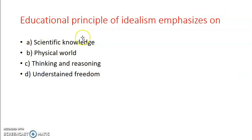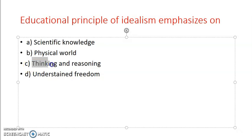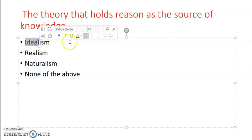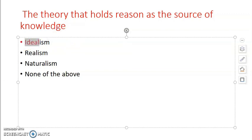Educational principle of idealism emphasizes scientific knowledge, physical world, thinking and reasoning, or understanding and freedom? So answer is C, that is thinking and reasoning. Idealism, as I explained before, focuses on thinking and reasoning. Ideas, thoughts - these they considered important. So wherever there is brain-related, thought-related answer, you just click idealism. The theory that holds reason as the source of knowledge? Obviously, as I just explained, idealism believes this, gives importance to reason.